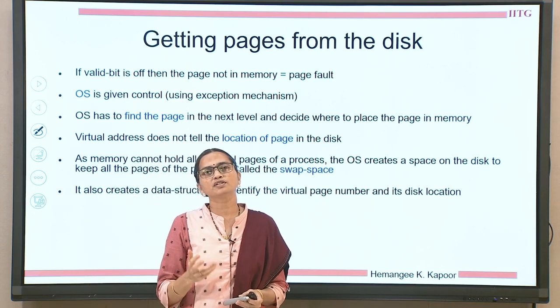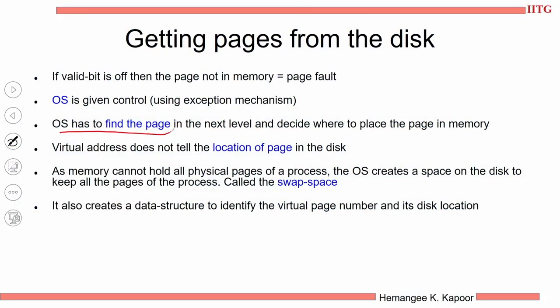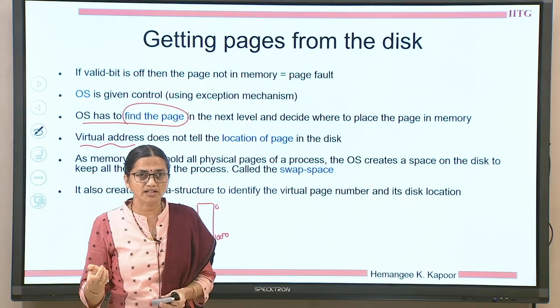How does the OS know where the page is sitting on the disk? The task of the OS is to find the page on the disk — the next level of memory, secondary storage. Locating the page is an important task the OS has to do. The virtual address space of any program starts from 0 and may go up to some number, and these numbers are the same across all processes. Given a virtual address, I cannot identify where it will be sitting on the disk.